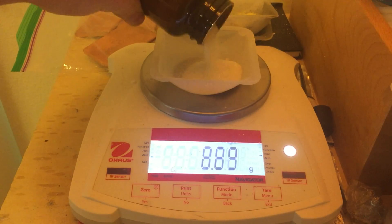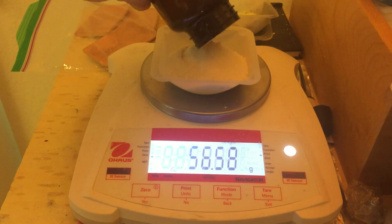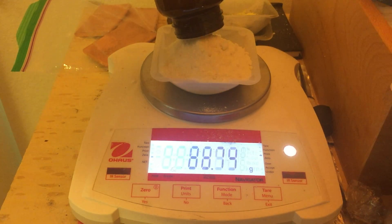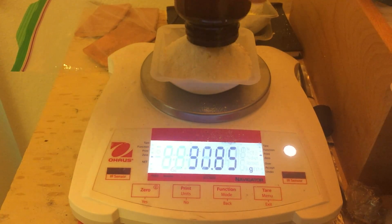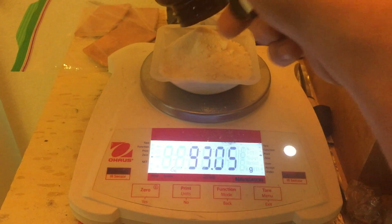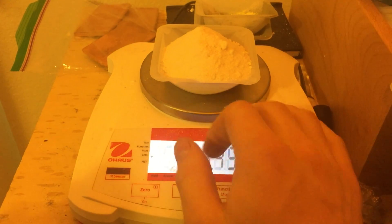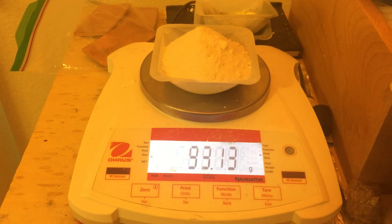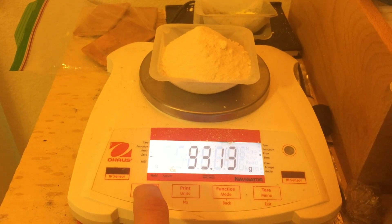First I needed to weigh out the reactants. Earlier this week, I made some crude ammonium sulfate by reacting ammonia cleaning solution and sulfuric acid drain cleaner. Purity isn't a huge issue in this reaction though, and some impurities won't affect the end product. In total, I had 93.15 grams of ammonium sulfate.